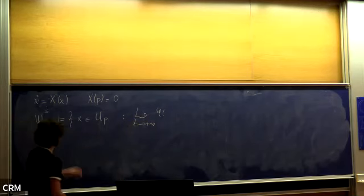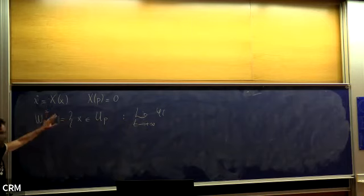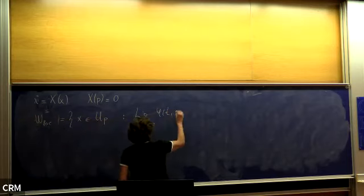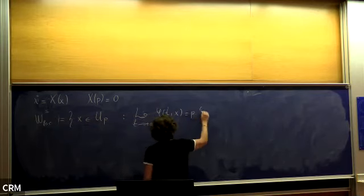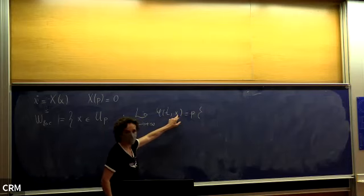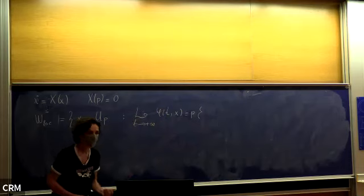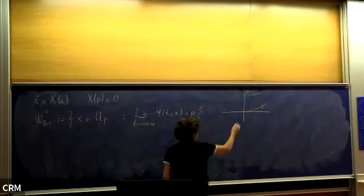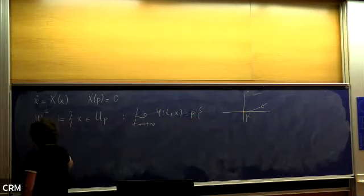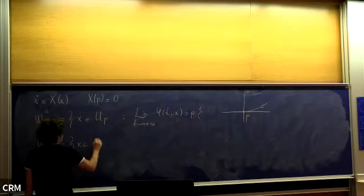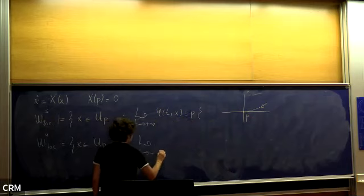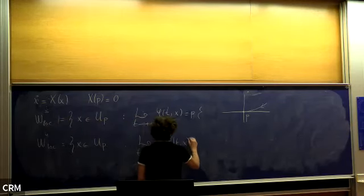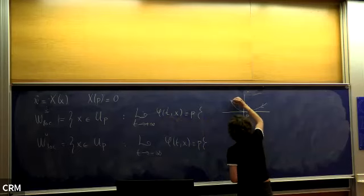The local stable manifold is the set of points such that the flow of the system, starting at the point, goes to the fixed point as t goes to infinity. Similarly, the unstable manifold is the set of points such that the limit as t goes to minus infinity goes to the fixed point.